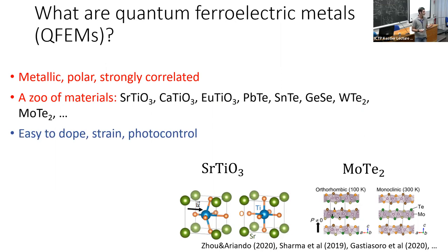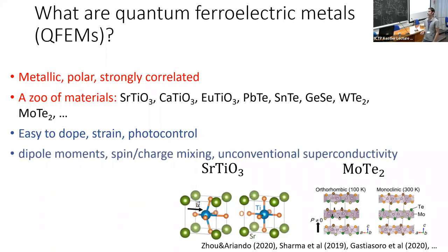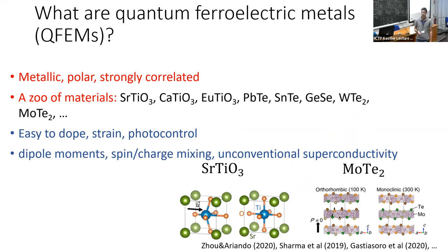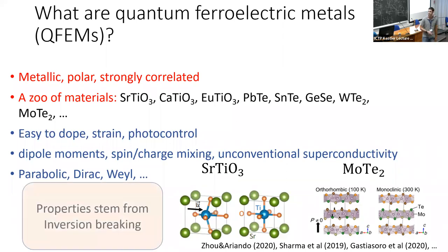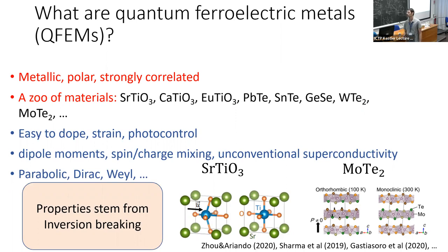These materials are very easy to dope, strain, and photo-control, which makes them very useful for applications in quantum materials. They have a huge number of fascinating properties from both basic science and applications points of view. They typically host dipole moments, have strong spin-orbit coupling, almost all of them have superconductivity at low temperatures, and there are increasingly more signs of unconventional superconductivity. In terms of band structures you can find parabolic, topological, non-topological, Dirac, and Weyl band structures in various compounds. All of this richness is a result of broken inversion symmetry, and people have been studying metals with broken inversion symmetry in the context of non-centrosymmetric superconductors, topological superconductivity, and so forth.